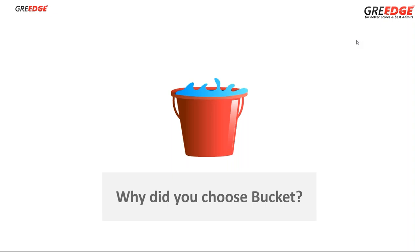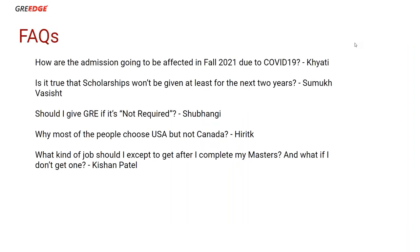All you have to do if you're a fall 2021 student is be patient. Start your preparation for GRE, TOEFL, and IELTS, look out for your universities, and move forward. Regarding fall 2021 admissions being affected by COVID-19 — I don't think so. This is my opinion after doing research. Scholarships won't be stopped, at least for the next two years.